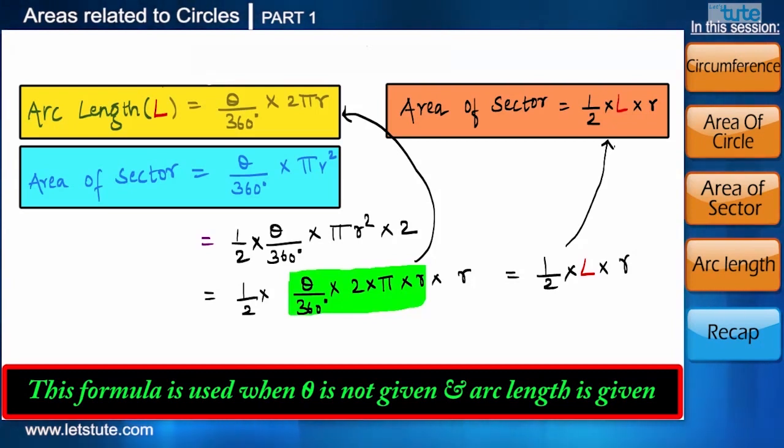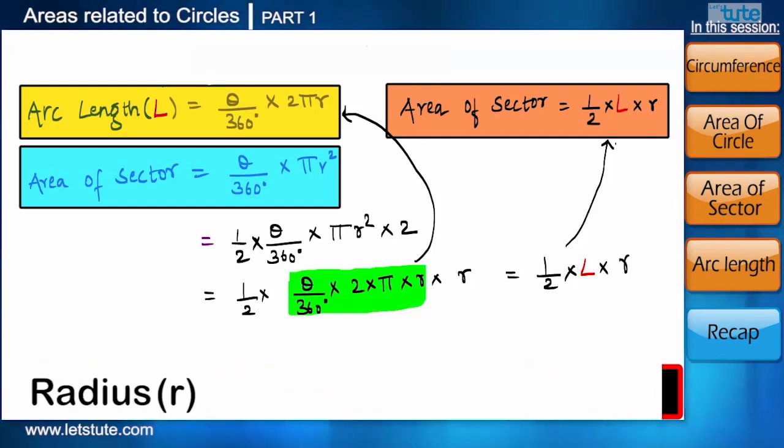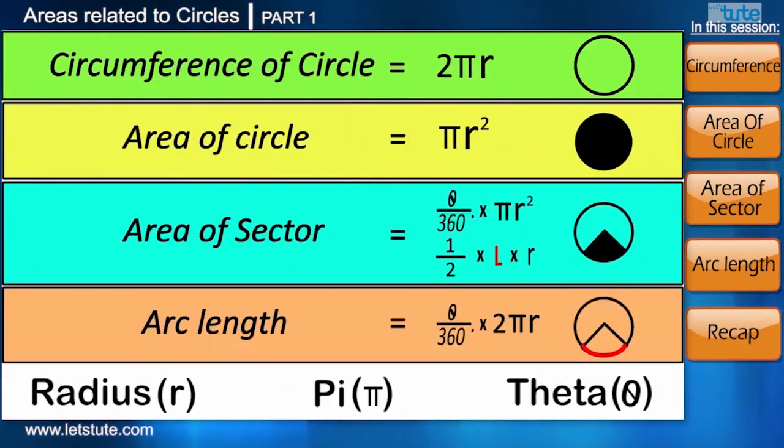And using this formula, we can calculate area of a sector when we do not know what θ is and when length of the arc is given. Before ending this session, let me tell you one important thing. If you have radius, π and θ, you can derive any formula for circle. And hence you actually do not have to mug up all the formulae. That's all for this session of areas related to a circus. Oops, sorry, I mean areas related to a circle. In our next session, we will learn how to use these formulae to calculate the area of various shapes which are related to a circle.